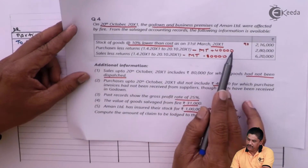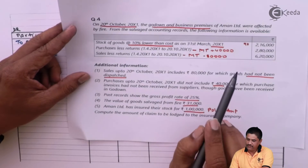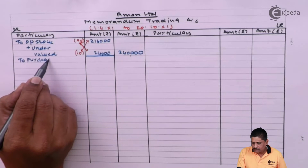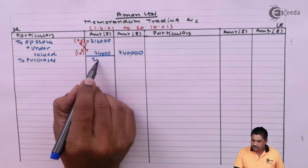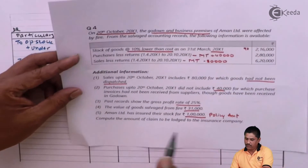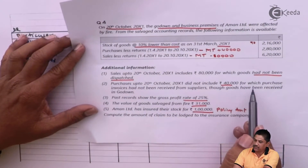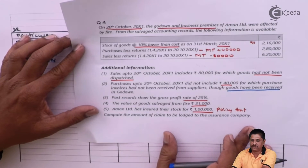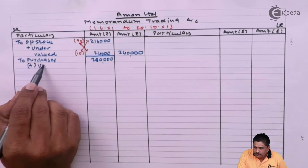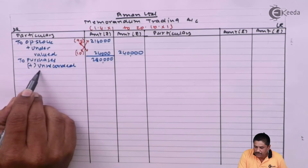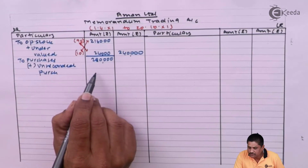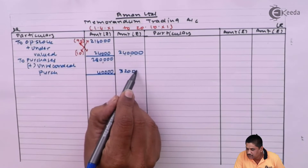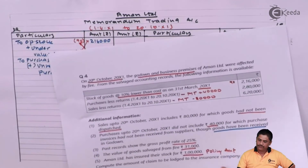Next, purchases less returns in this period is 2,80,000. But we also need adjustment number 2: purchases up to 20th October 200X1 did not include 40,000 for which the purchase invoice had not been received from the supplier, though goods were received. So we add unrecorded purchases of 40,000, making the outer column total 3,20,000.